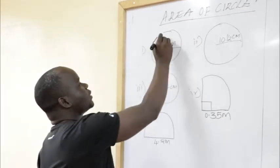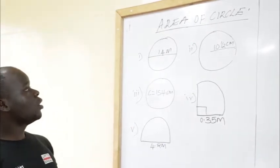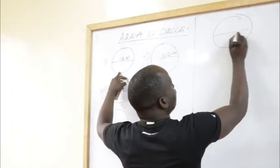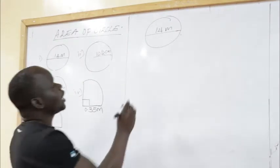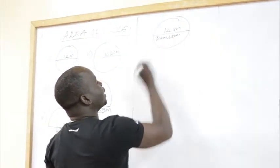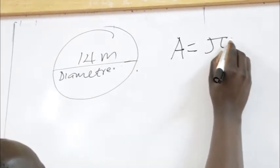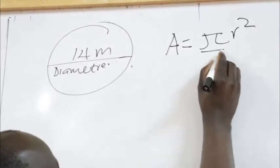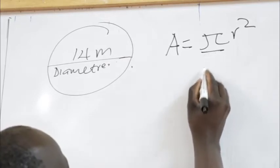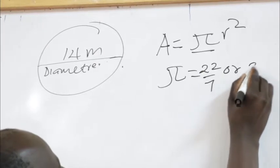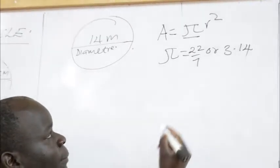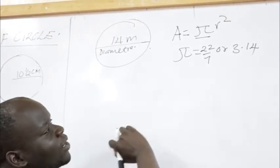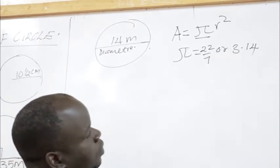Example number one: the area of a circle. We have a circle with a line of 14 meters cutting across it. That line is known as the diameter. The formula for area of a circle is: Area = π r², where π is the constant 22/7 or 3.14. Use 22/7 if the radius or diameter is divisible by 7.